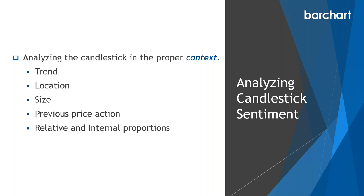Locations: bearish reversal candles work better when located inside areas of resistance, either in the timeframe being created or those higher timeframes, and after an extended upward price action. Bullish reversals are best found in or at support or at the end of an extended downtrend. Bearish continuations are best found after a bearish reversal, and bullish continuations after a bullish reversal.